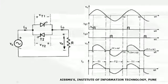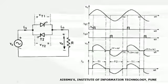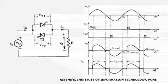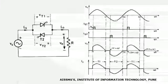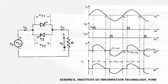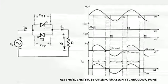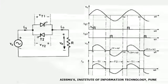At instant pi, the current flowing through the circuit reduces to zero, and the voltage applied to thyristor T1 also reduces to zero. After instant pi, the voltage gets reversed. So at instant pi, the current through T1 reduces to zero, natural commutation takes place in thyristor T1, and T1 gets turned off.